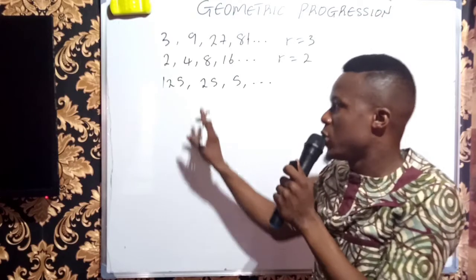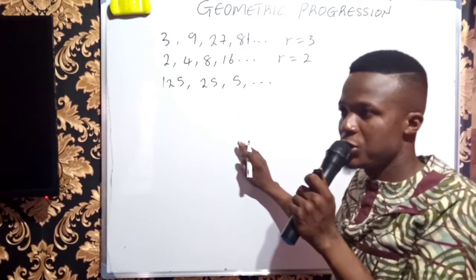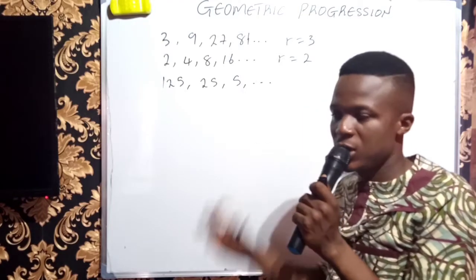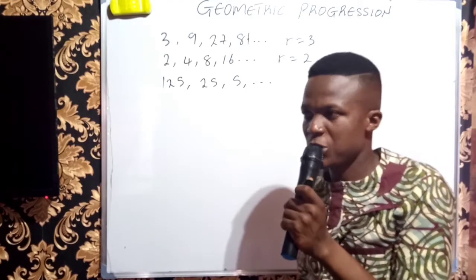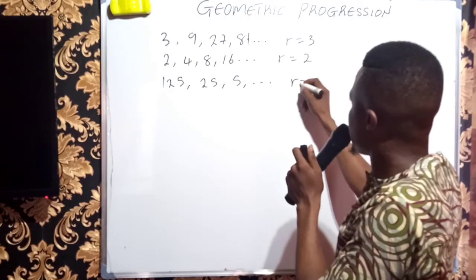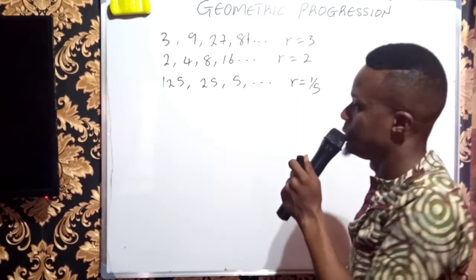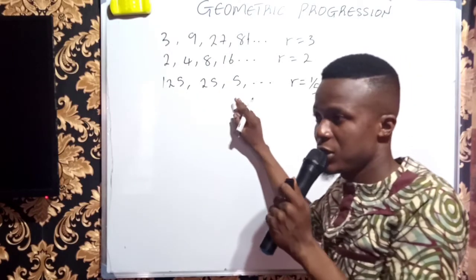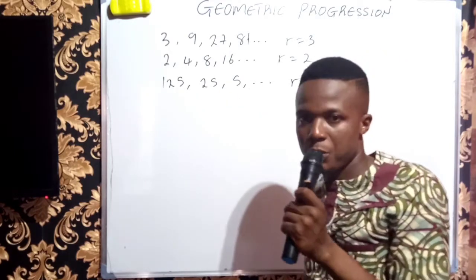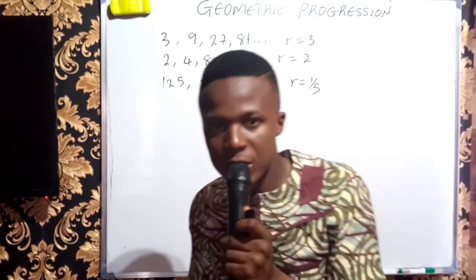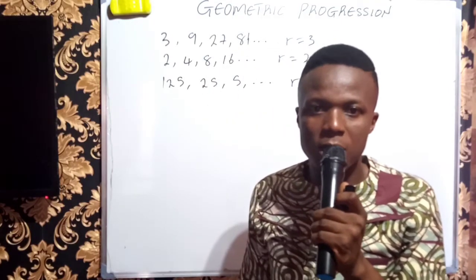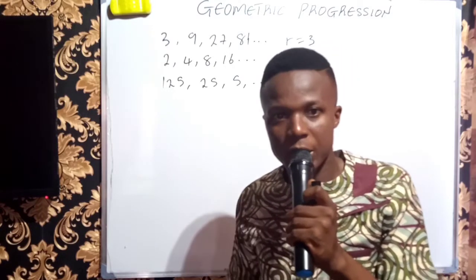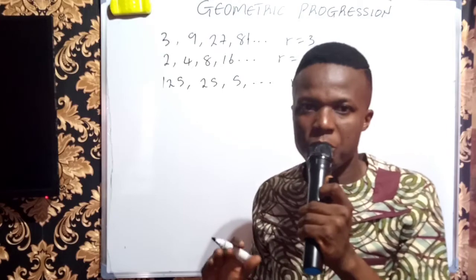You will see that this one is depreciating, it is coming down, it is trying to tend to 0 with time. It is still multiplication. You don't just call it division. It is still multiplication of a constant term. But this time around, we are multiplying by 1 over 5. Because when I multiply each of the terms by 1 over 5, I will get successive terms. That is just geometric progression. A kind of sequence where successive terms are obtained following a well-defined rule of multiplying with a constant term called the common ratio.